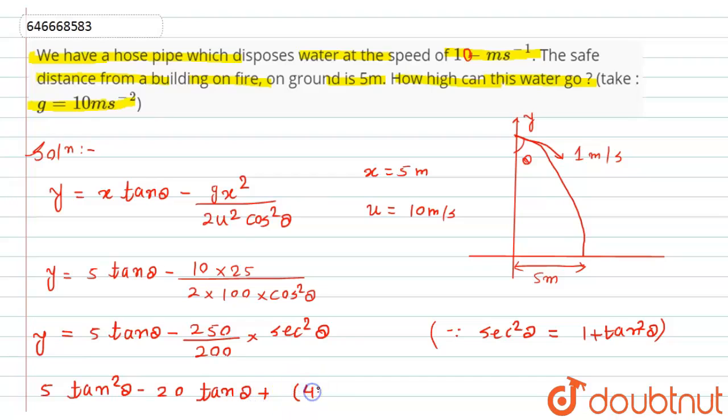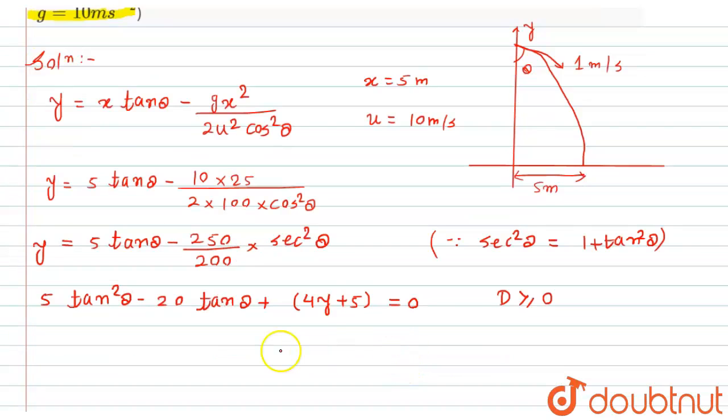+ (4y + 5) = 0. For real values, the discriminant should be greater than or equal to 0. The discriminant is b² - 4ac